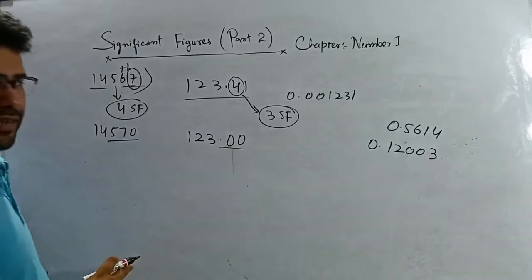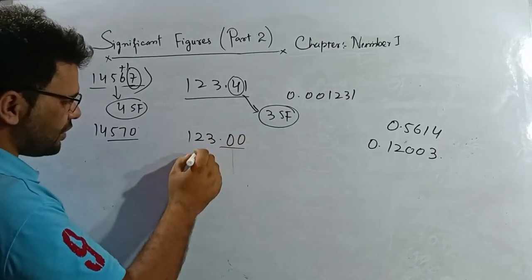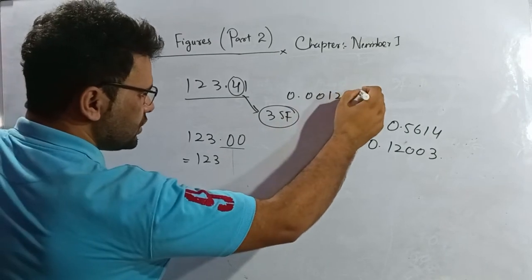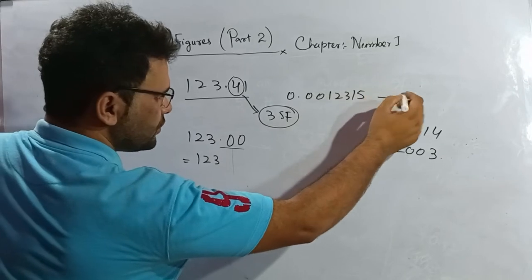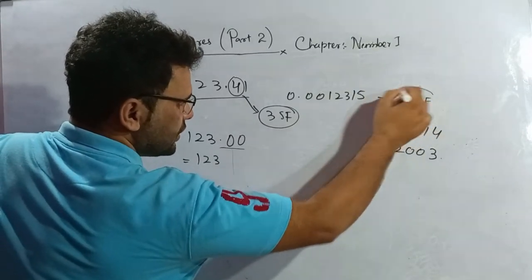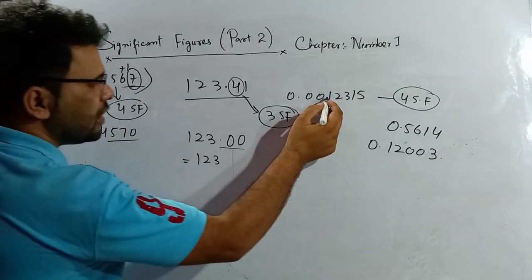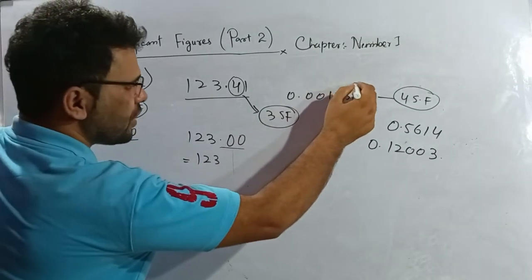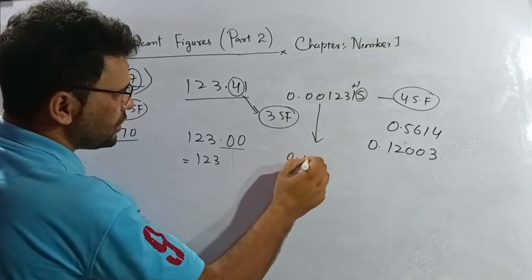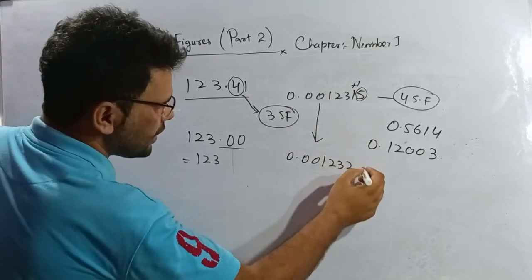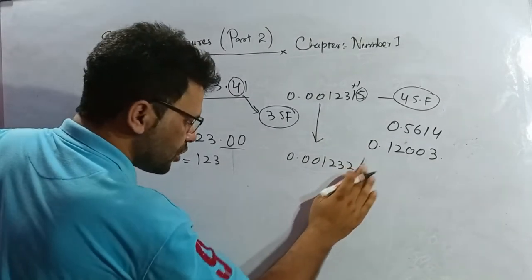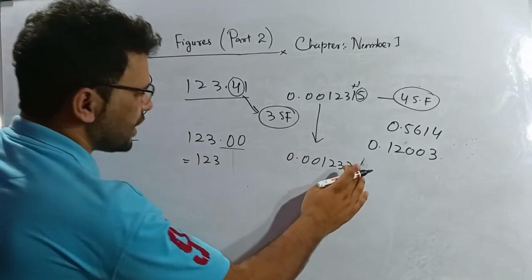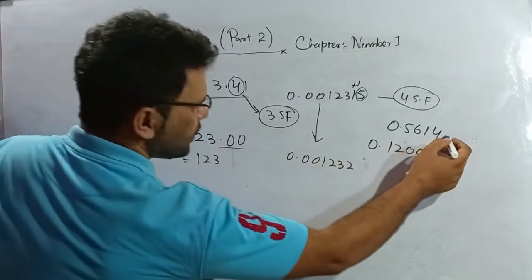After the decimal, if there are trailing zeros on the right side of the number, they do not make sense to write. So for example with 0.00123, if asked to write correct to four SF, I check the fifth significant figure — it is equal to five, so I add one. The answer is 0.001232, and trailing zeros after that are not needed.